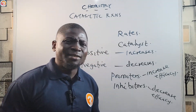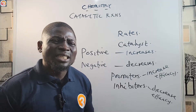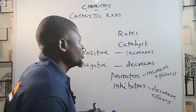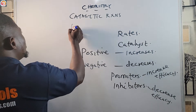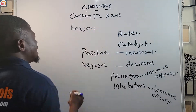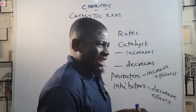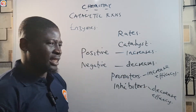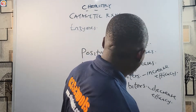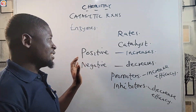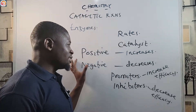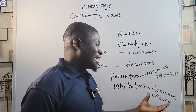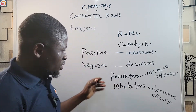There are also some catalysts that alter the rate of reactions in living organisms. They are called enzymes. So to summarize: we have positive catalysts, negative catalysts, promoters that increase the efficacy of catalysts, inhibitors that decrease the efficacy of catalysts, and enzymes.